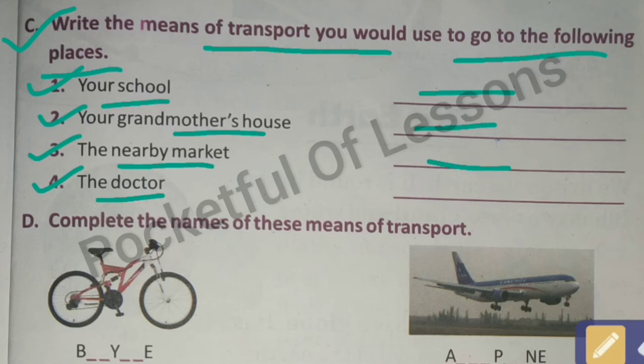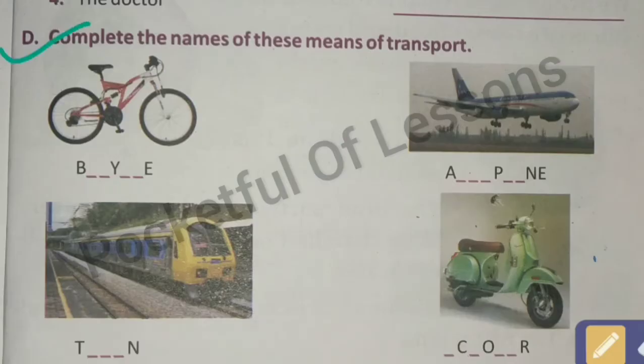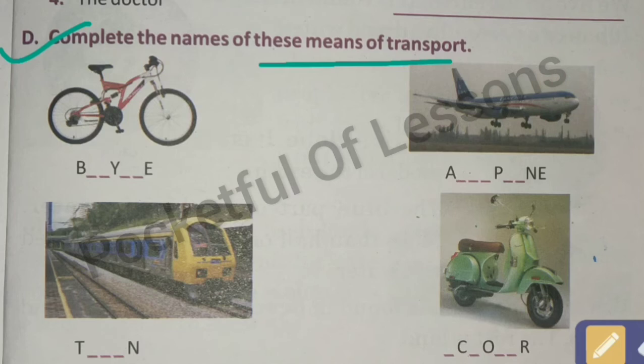Number 4: the doctor - which means of transport do you take to go to the doctor? Whatever your means of transport is, write it here. Exercise D: complete the names of these means of transport. Pictures are given, identify them and fill in the missing letters. The first one is bicycle.